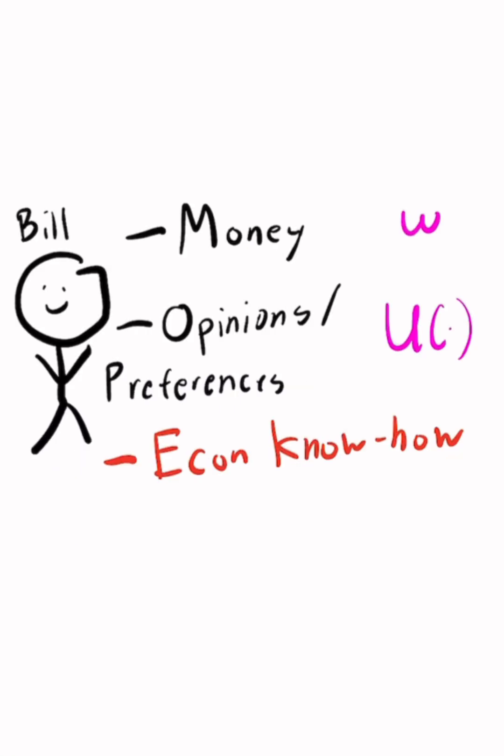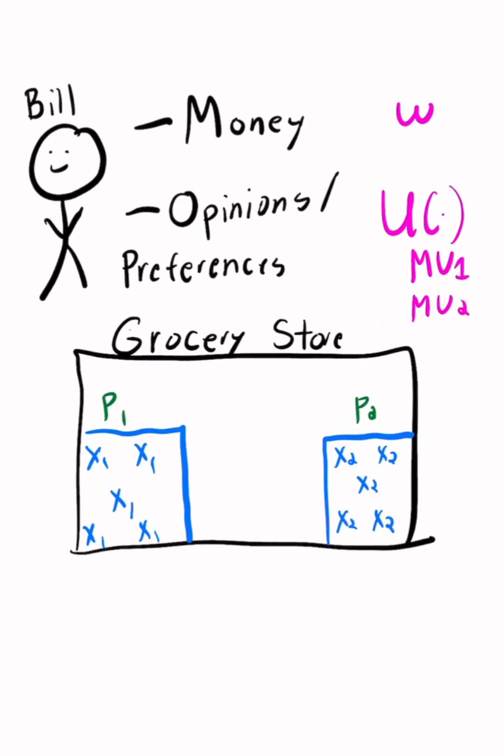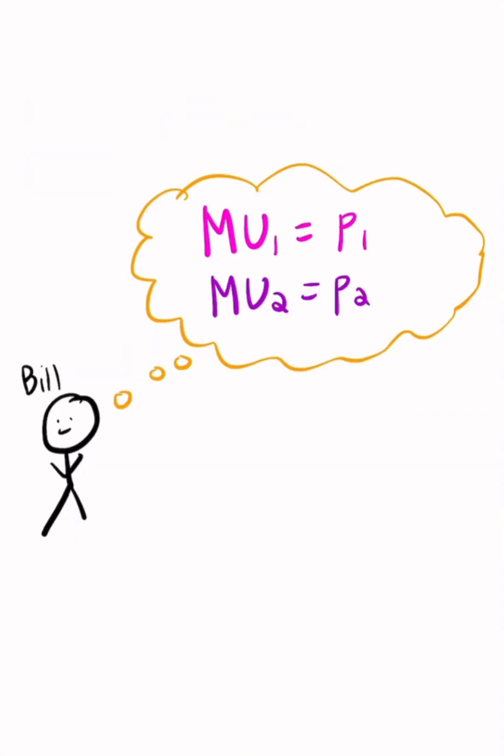Luckily Bill has a third thing which is a well-developed econ brain or econ know-how. Specifically he knows what his marginal utilities are of each of the two goods and then he knows at the optimal marginal benefit is equal to marginal cost.